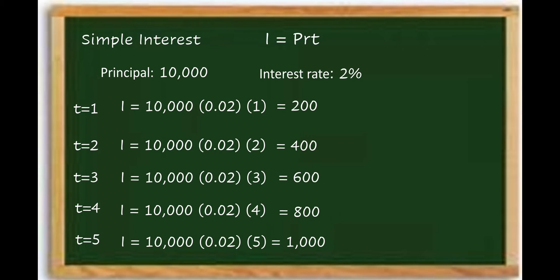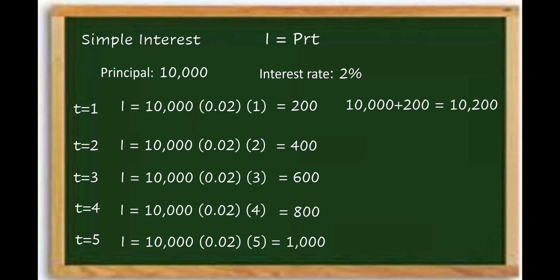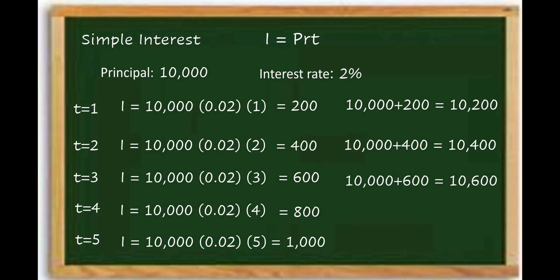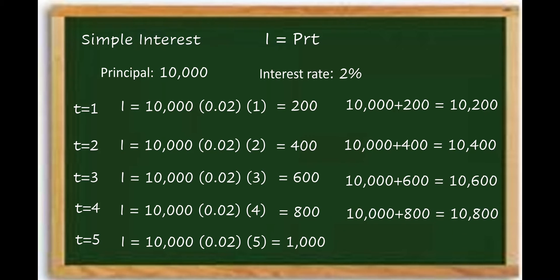For simple interest summary: at the end of year 1 we have ₱10,200; year 2, ₱10,400; year 3, ₱10,600; year 4, ₱10,800; and year 5, ₱11,000. That's how we compute simple interest.